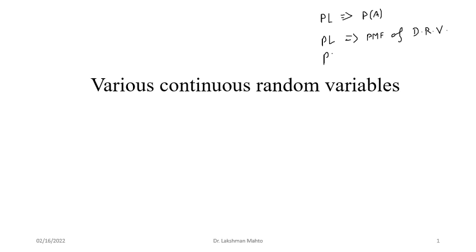If you apply probability law for a continuous random variable, you get a PDF — probability density function. So, if you want to find probability of an event, you need to know what kind of probability law you are applying. If you want to find the probability mass function for a discrete random variable, or a probability density function for a continuous random variable, you need to know what kind of probability law is applied. Understanding probability law helps you find the relevant concept to see the pattern of observed values of a random variable.